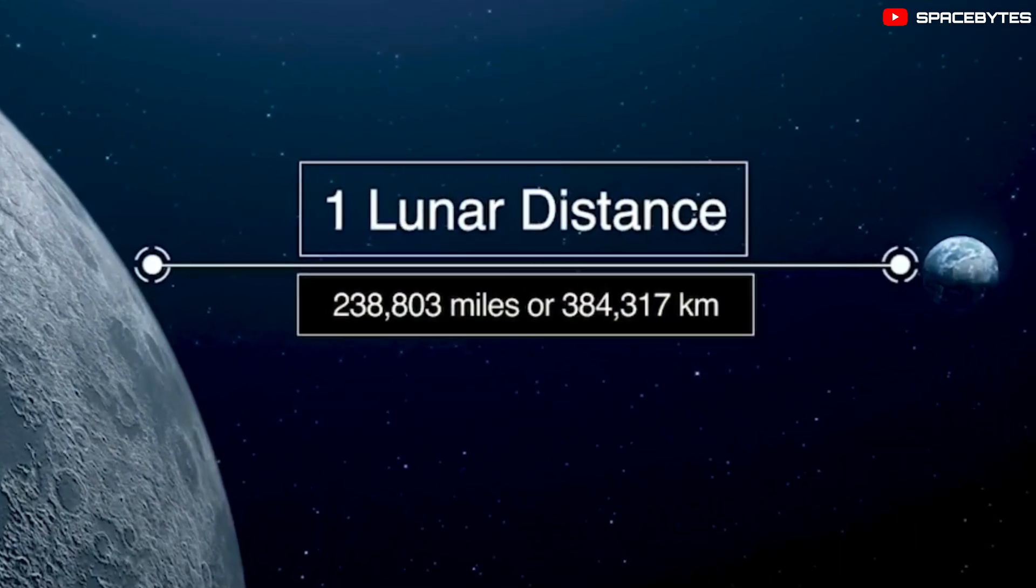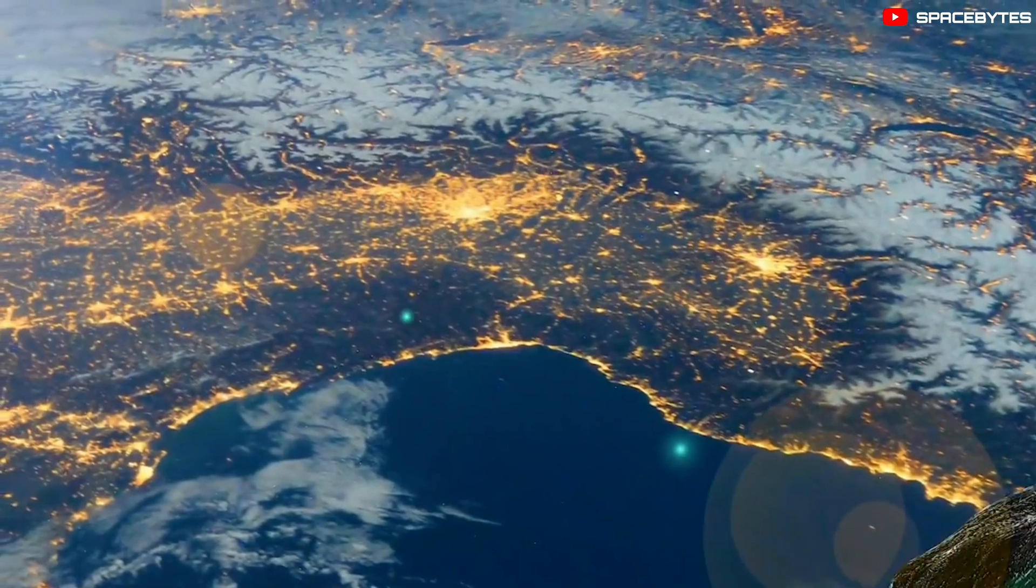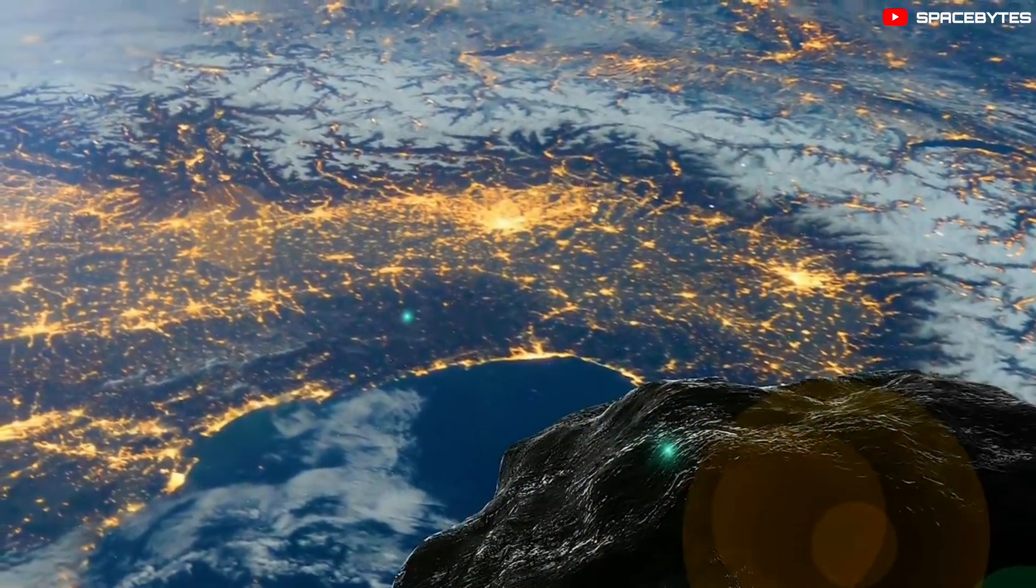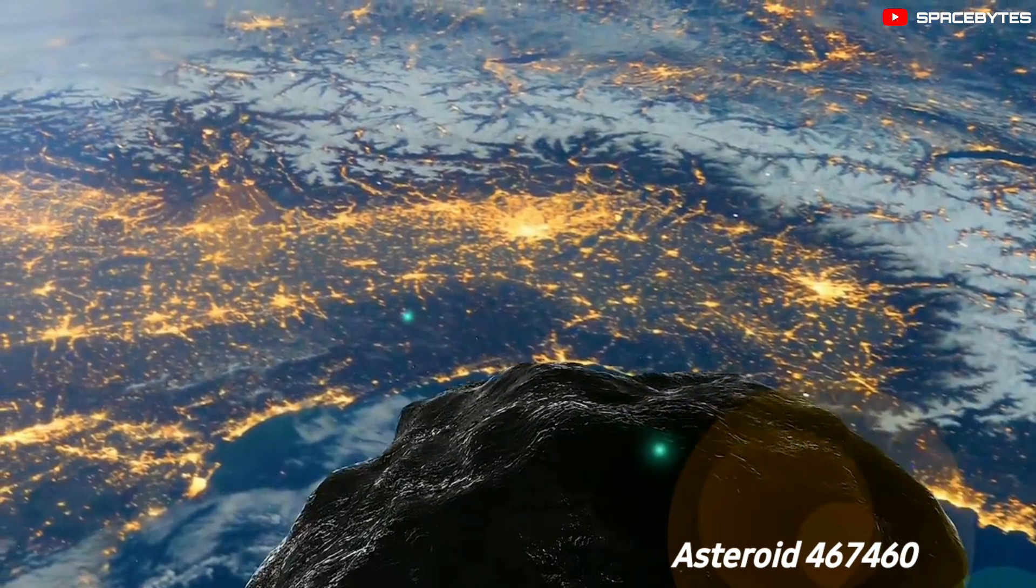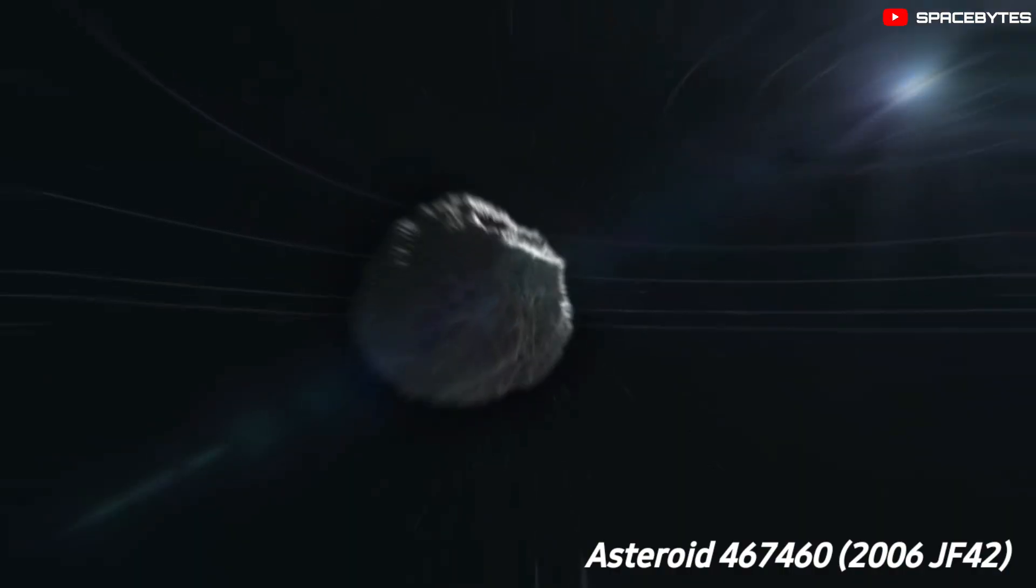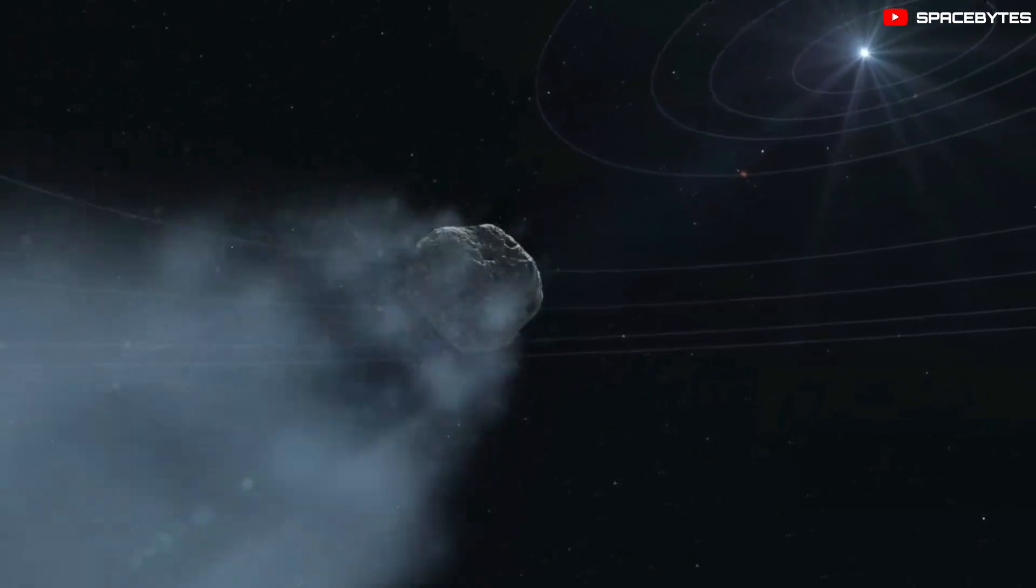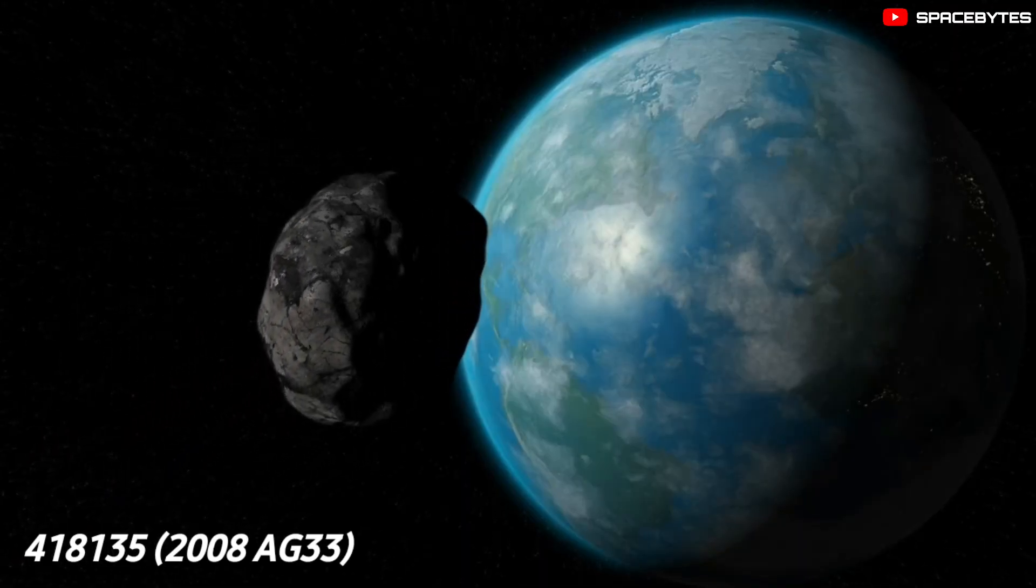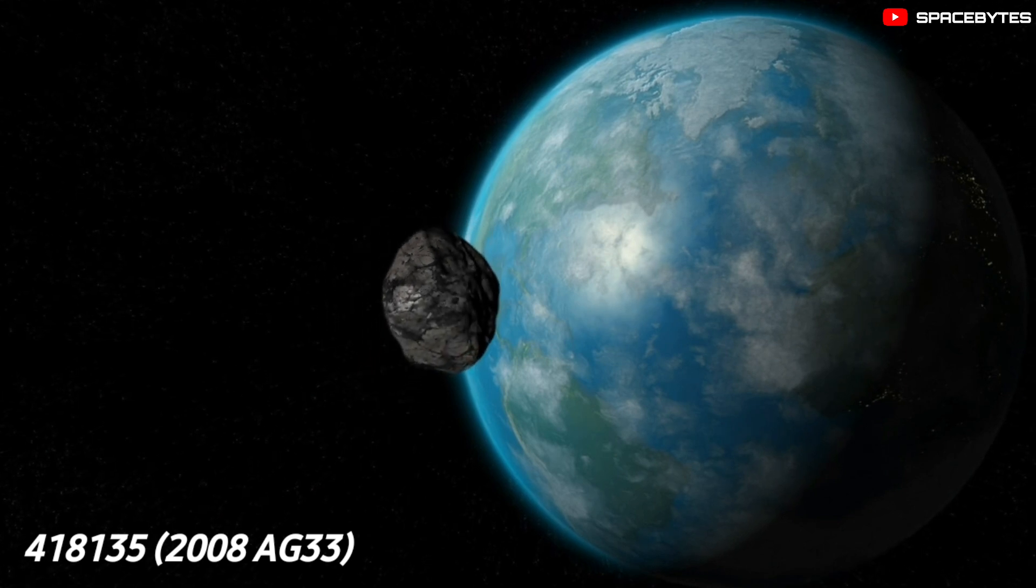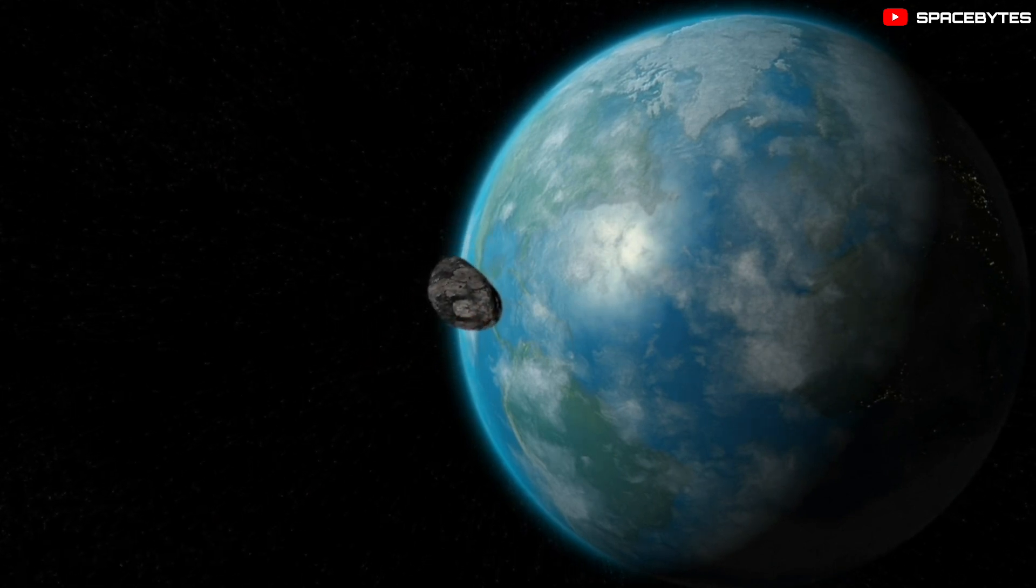This is not the first time that an asteroid has passed Earth closely this year. On May 9th, asteroid 467460, 2006 JF42, flew close past Earth. Then, on April 28th, asteroid 418135, 2008 AG33, passed by our planet.